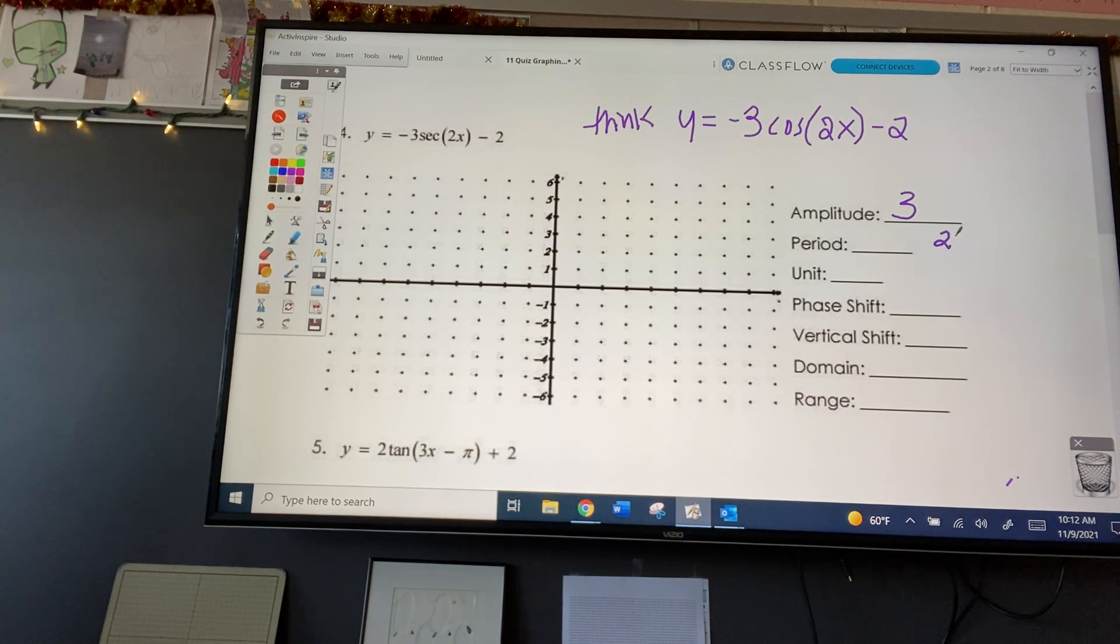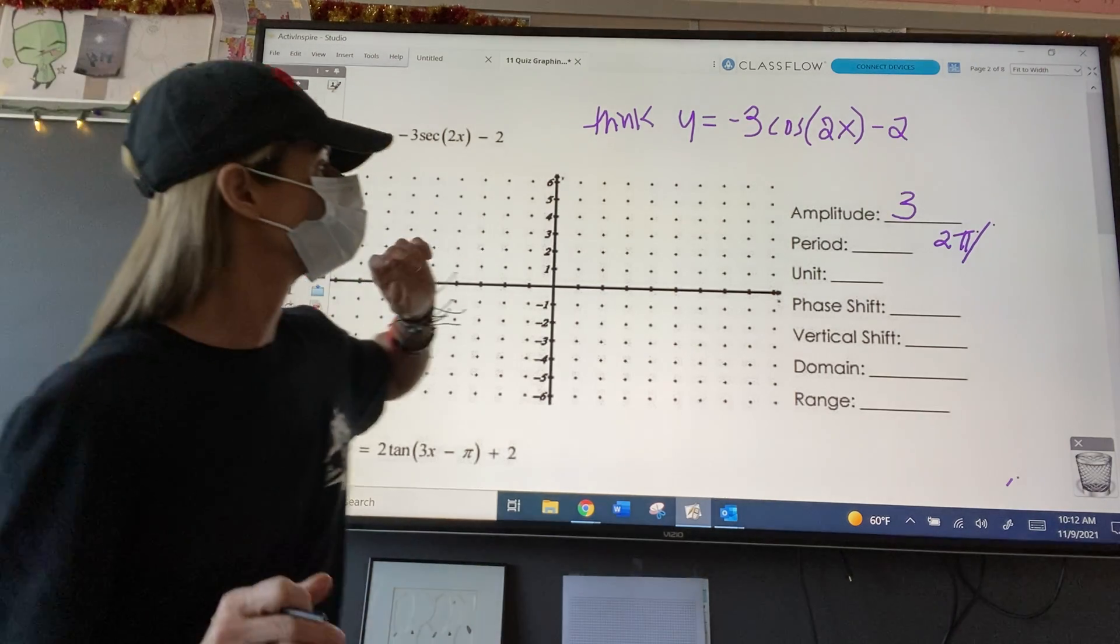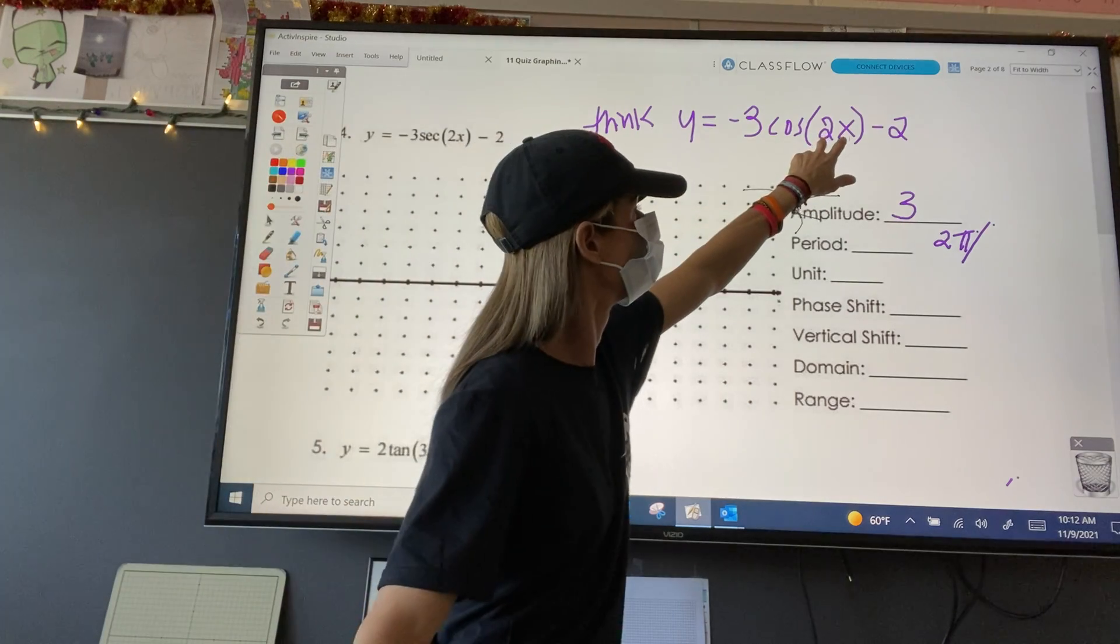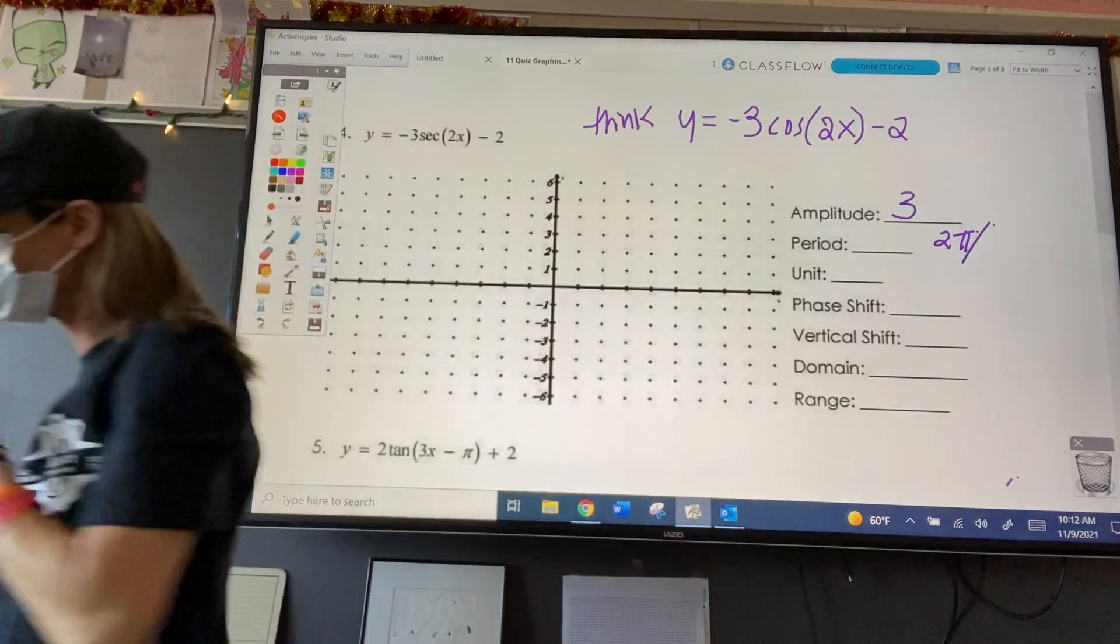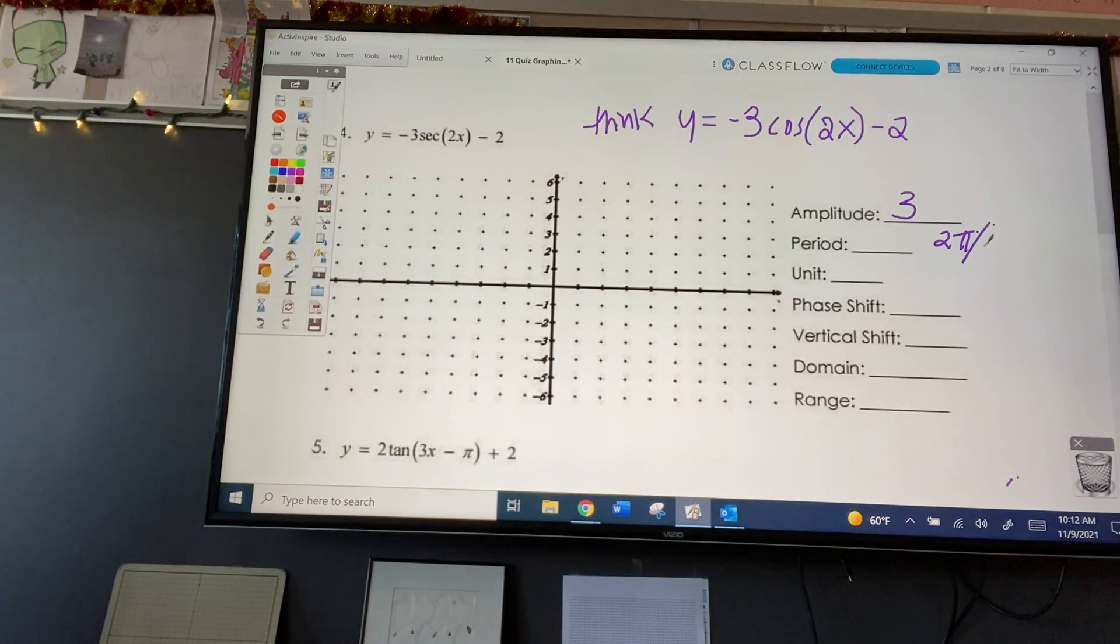Okay, period is 2 pi divided by b. In this case, b is? b is the number. So 2 pi divided by 2. That's just pi. Excellent. Therefore, the unit is? Put that on my graph.